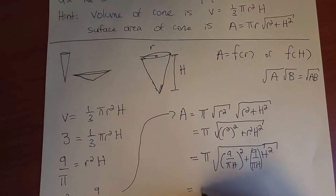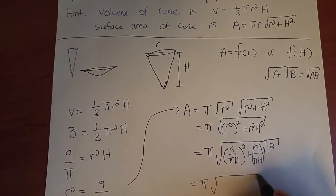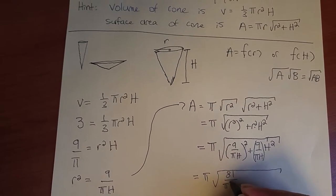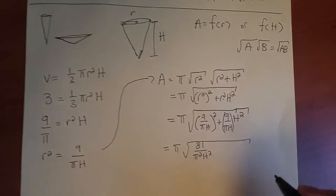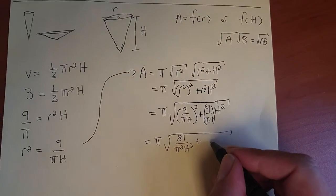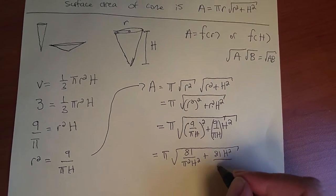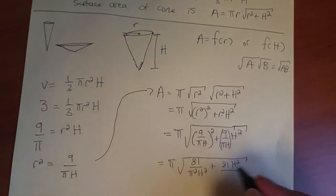Next step: π outside, √[81/(π²h²)] from that term, plus 81h²/... oh sorry, there's no squared there, it's just a 9.